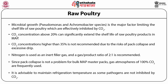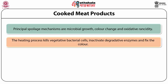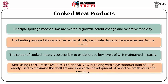The principal spoilage mechanisms that limit the shelf life of cooked meat products are microbial growth, color change, and oxidative rancidity. For cooked meat products, the heating process should kill vegetative bacterial cells, inactivate degradative enzymes, and fix the color. Hence, spoilage of cooked meat products is primarily due to post-process contamination by microorganisms. The color of cooked meats is susceptible to oxidation, so low levels of oxygen are maintained in packs. MAP using carbon dioxide-nitrogen mixes — 25–50% carbon dioxide and 50–75% nitrogen — along with a gas-to-product ratio of 2:1 is widely used to maximize shelf life and inhibit development of oxidative off-flavors and rancidity.